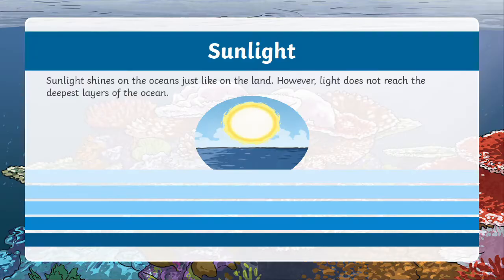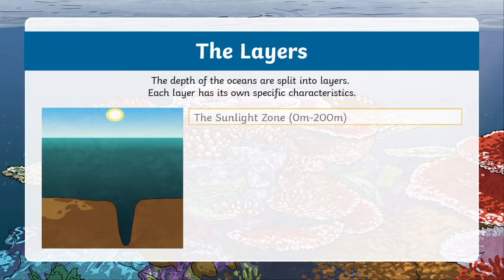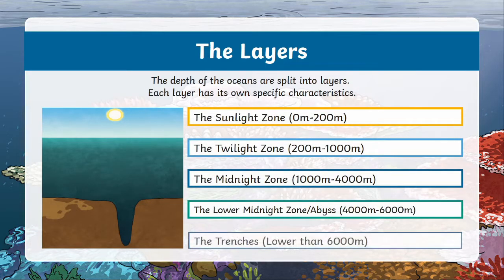I think it's about time for us to grab our imaginary scuba gear and dive into learning more about the different layers of the ocean. Sunlight shines on the ocean just like the land. However, the light and warmth from the sun doesn't reach the deeper layers of the ocean, which means it gets darker and colder the further down you go. The ocean has five layers: the sunlight zone, the twilight zone, the midnight zone, the lower midnight zone or the abyss, and the trenches. Each of these zones have different characteristics and sea life that lives in them.